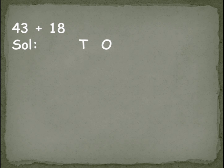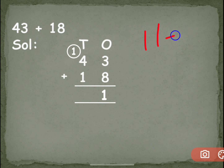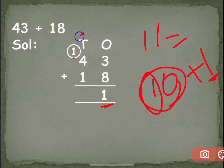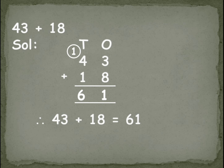Now with regrouping: 43 plus 18. Make the columns: 43 is 4 tens and 3 ones; 18 is 1 ten and 8 ones. Start from ones — 3 plus 8 becomes 11. In 11, write the 1 in ones place and carry the 1 ten to the tens column. Then 1 plus 4 is 5, plus 1 carried is 6. So you write 6 under tens. That means 43 plus 18 is equal to 61.